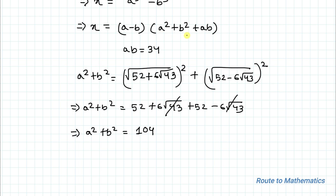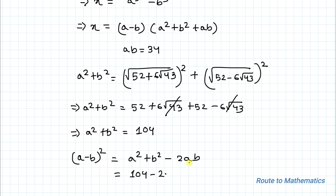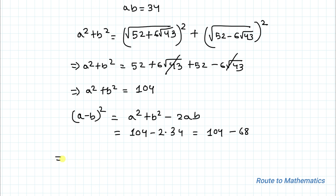Now we have A squared plus B squared plus AB. Next, let's find A minus B. It is easier to find (A minus B) squared: (A minus B)² = A² + B² - 2AB = 104 - 2×34 = 104 - 68 = 36. So (A minus B)² equals 36, which means A minus B equals 6.